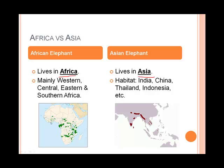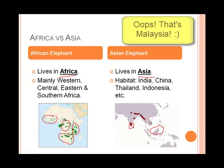Here's the distribution map for Africa. As you can see, the African elephant lives in Western Africa, Central Africa, Eastern Africa in countries like Tanzania, Kenya and Ethiopia, and then Southern Africa — Namibia, Botswana and South Africa. In Asia, the main countries are India, then China a little bit, Thailand, Indonesia, etc.